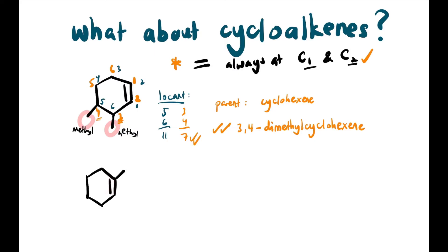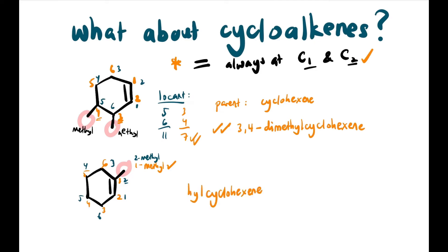Contoh yang bawah pula — kita ada sama juga 6 karbon di sini. Warna orange: 1, 2, 3, 4, 5, 6. Atau warna biru: 1, 2, 3, 4, 5, 6. And then, dia ada 1 anak sana — methyl. Kalau kita tengok warna biru, 2-methyl. Kalau warna orange, 1-methyl. Jadi, kita akan prefer letak nama — nama lengkap dia 1-methylcyclohexene.